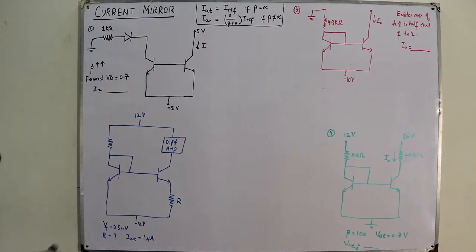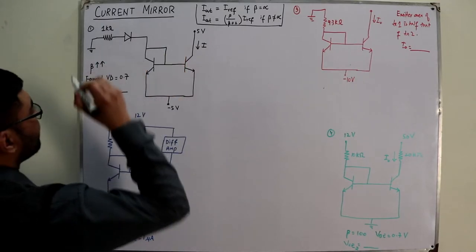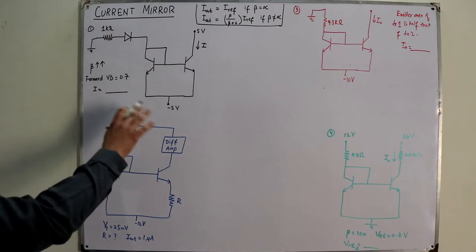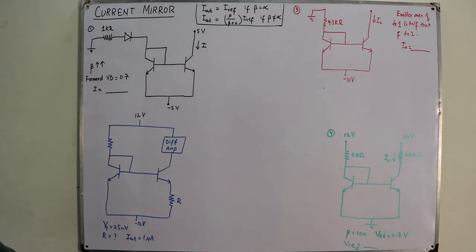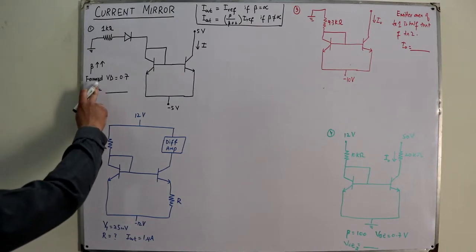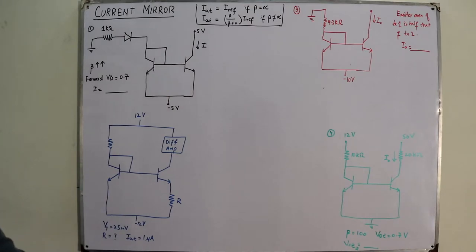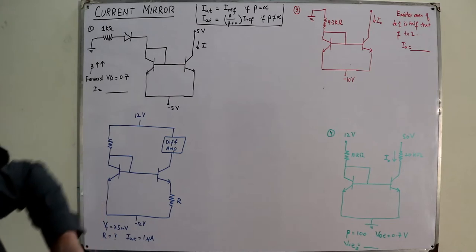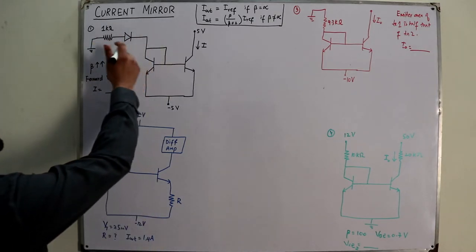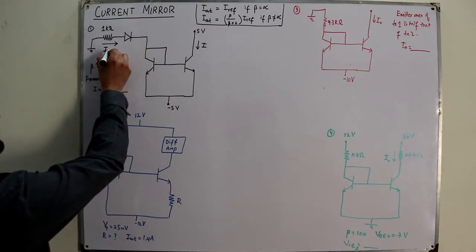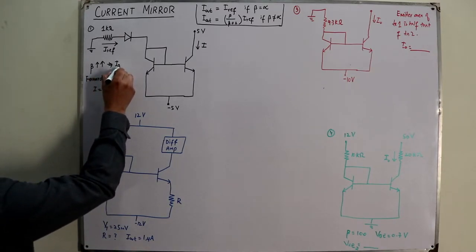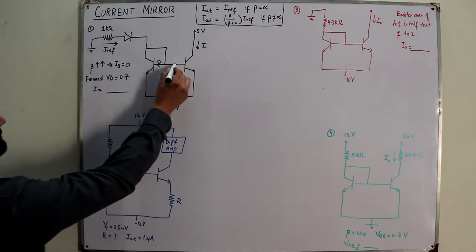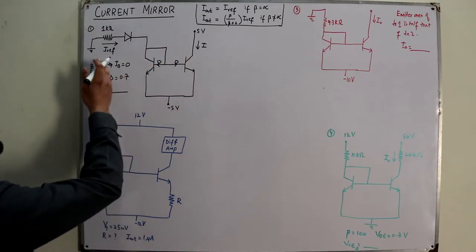Question number one: two perfectly matched silicon transistors are connected as shown. Beta is given to be very high, and the forward bias voltage drop of the diodes is 0.7 volts. The output current I is controlled by the reference current flowing through the resistance. If beta is very high, this implies the base current is approximately zero, which means I_output equals I_reference.